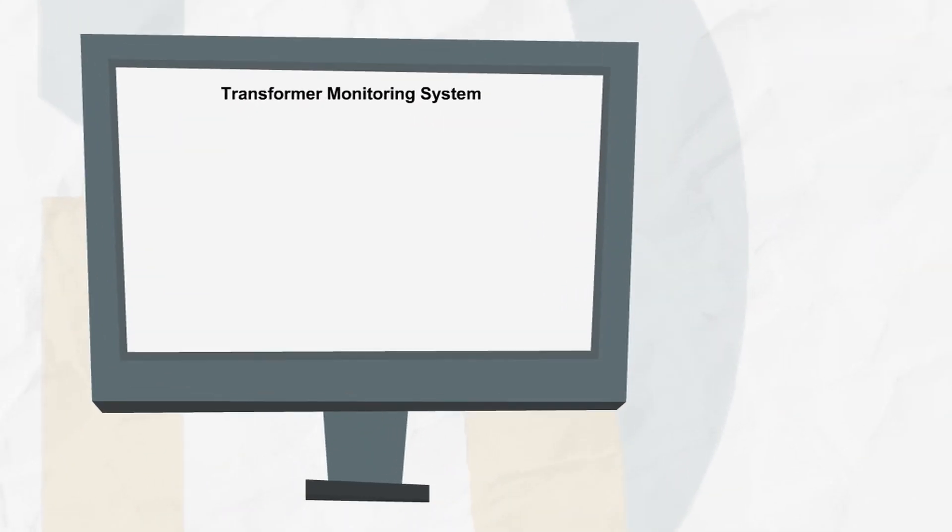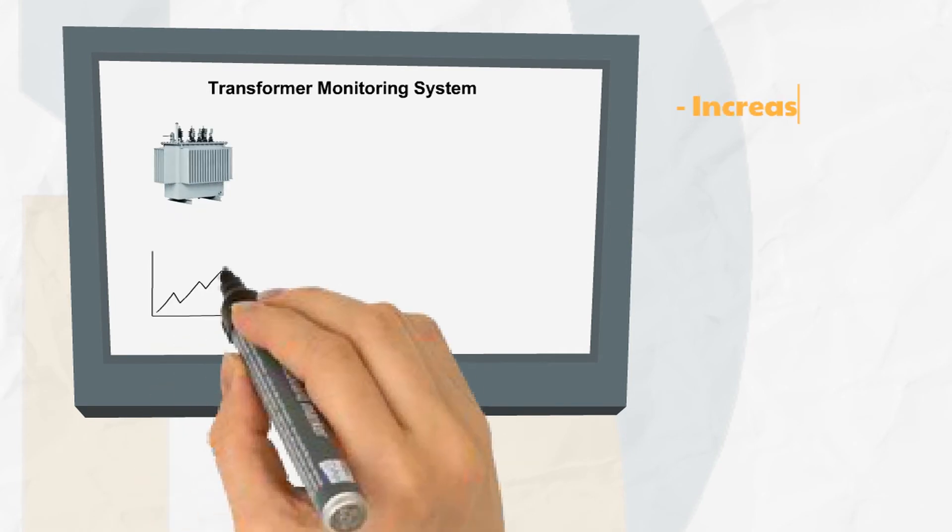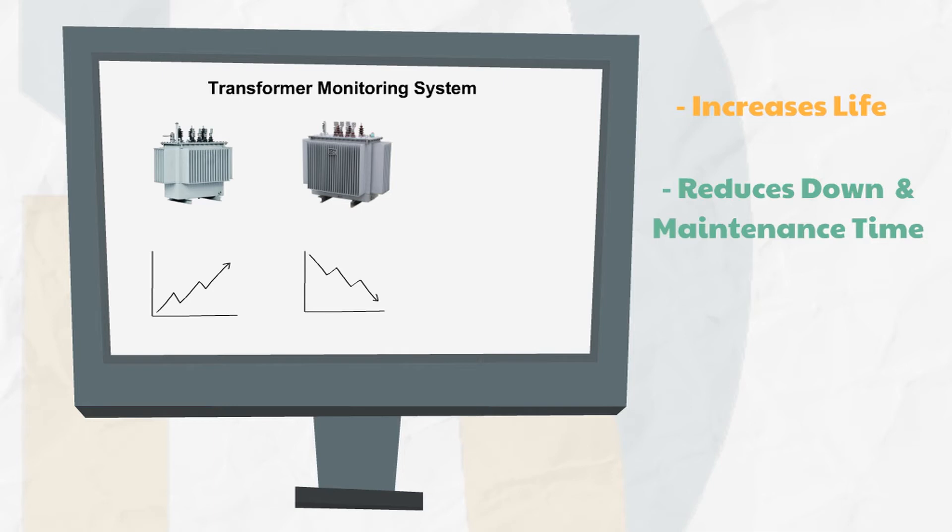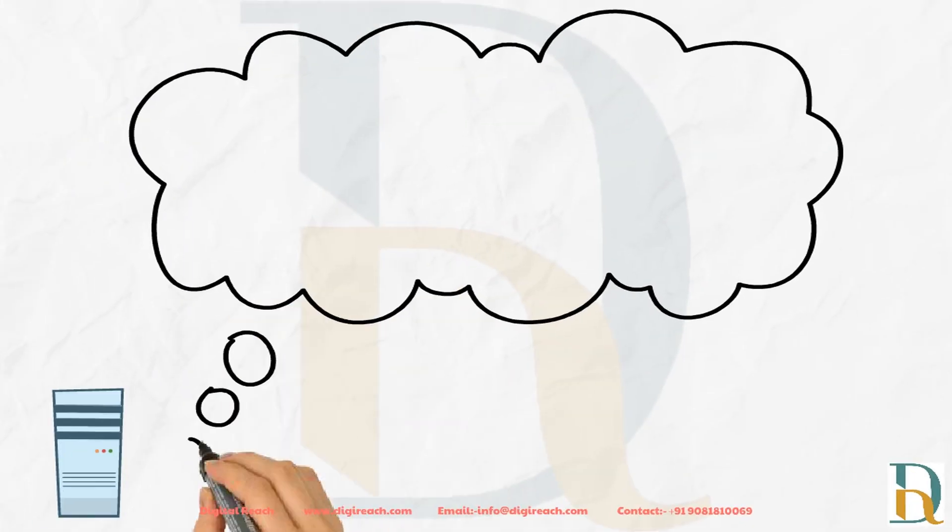Our transformer monitoring system will help in elongating its life and reducing down and maintenance time, as it monitors transformer parameters in real-time and can inform the operator if something goes wrong. With data generated from the system, it can analyze and inform the operator for maintenance of transformer.